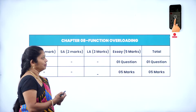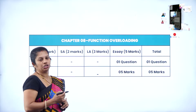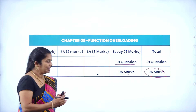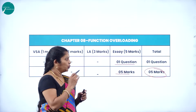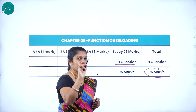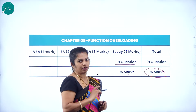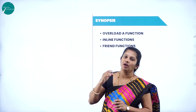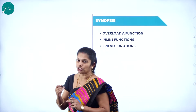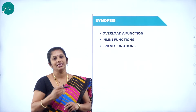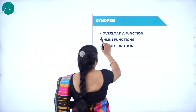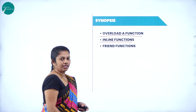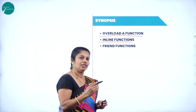In the annual exam, you will get only one question on Part D for five marks. It means that on this chapter you will get only one question for five marks. When we come to the contents of this chapter, you will study: what do you mean by function overloading?